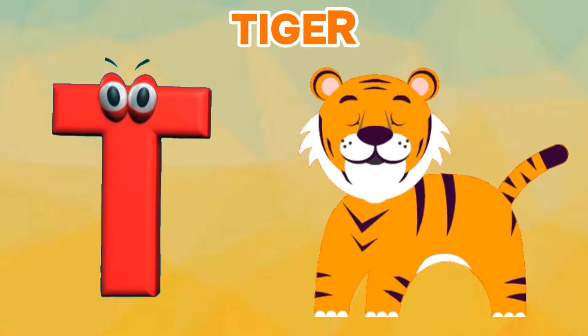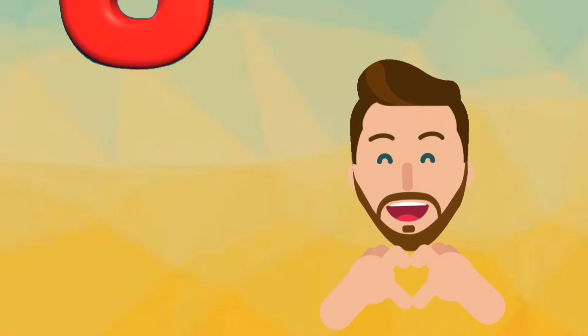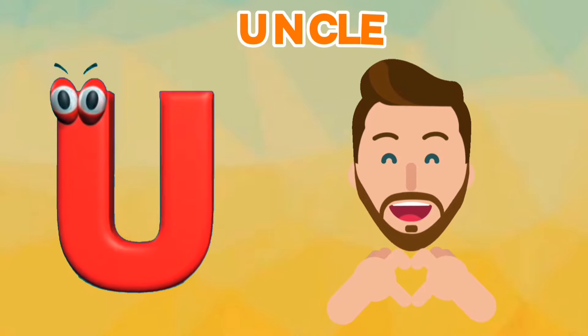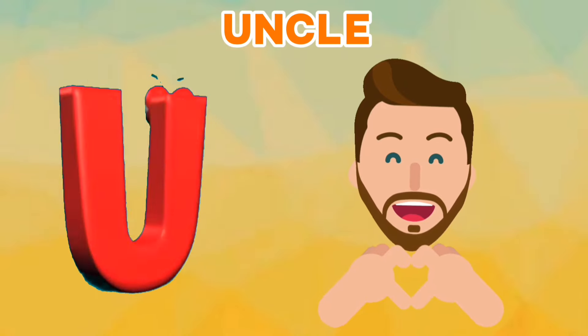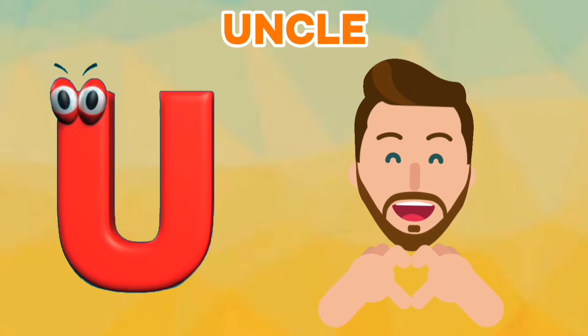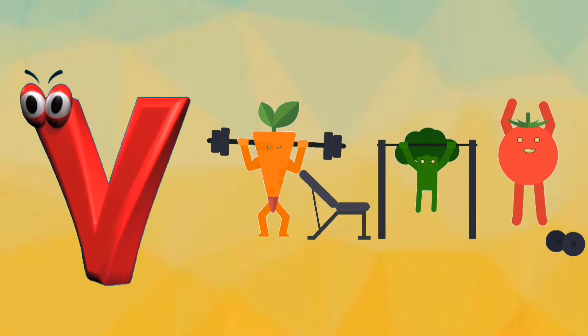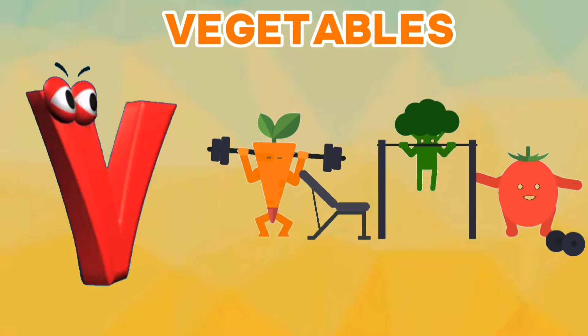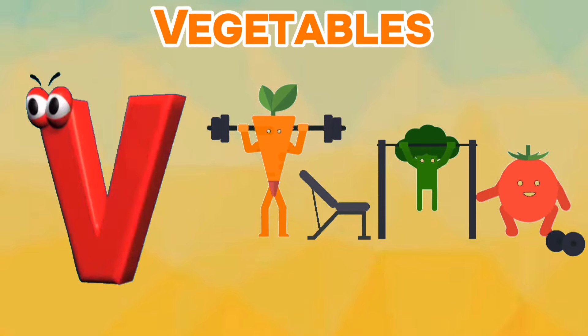T is for Tiger. T, T. Tiger. U is for Uncle. U, U. Uncle. V is for Vegetables. V.